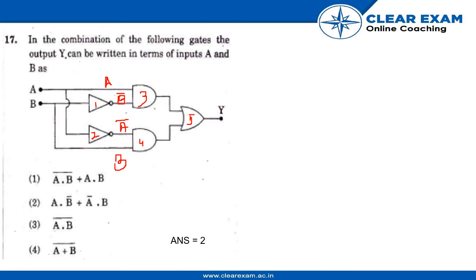Output of gate 1 is B', output of gate 2 is A'. Now gate 3 and gate 4 are AND gates. If the inputs of the AND gate are A and B, then output Y equals A dot B. So output of gate 3 is A dot B', output of gate 4 is A' dot B.